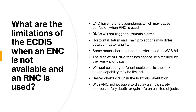The display of RNC features cannot be simplified by removal of data to suit a particular navigation circumstance. When you zoom in or out on a scale within the system, the raster chart image is only magnified — it does not step through available information to provide a clear display. Without selecting different scale charts, the look-ahead capability is also limited. Furthermore, raster charts are always drawn in north-up orientation, and when the orientation is changed to course-up or route-up display modes, the readability of chart text and symbols may be affected.